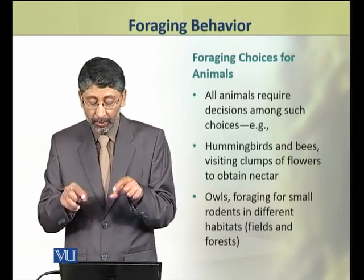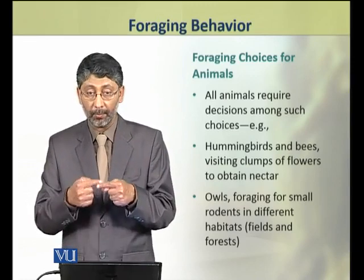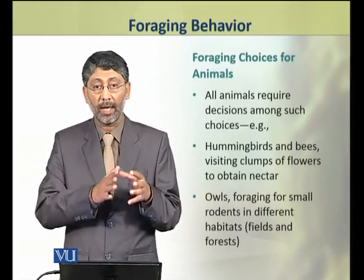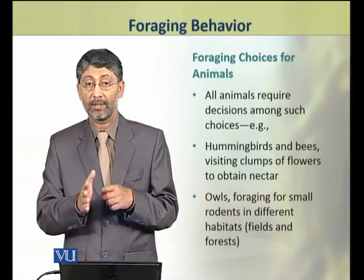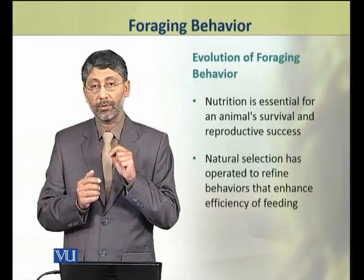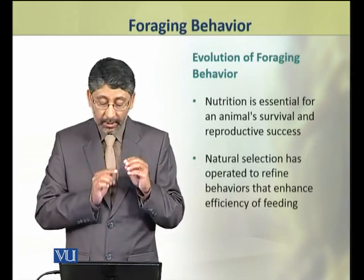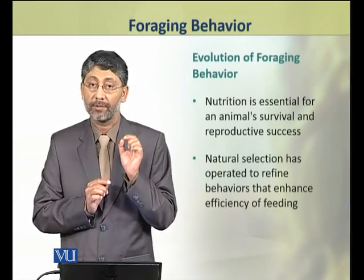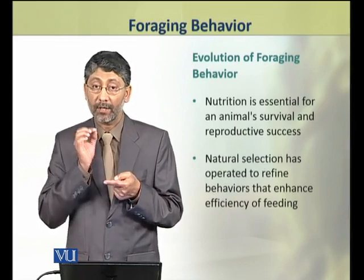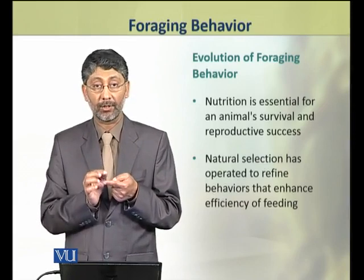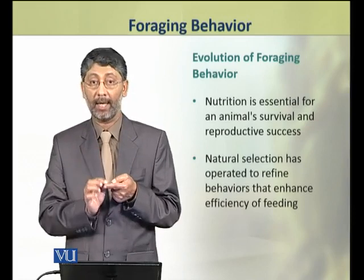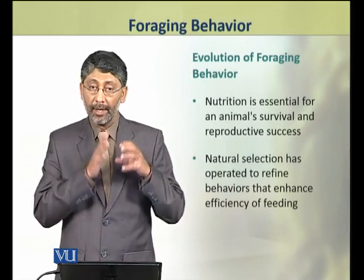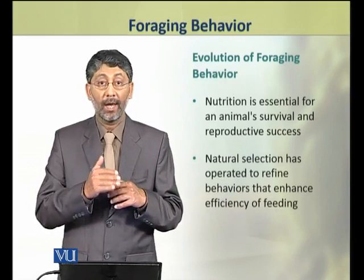Their prey items are distributed in patches, and when food is depleted in those patches, such animals have to make decisions. This is essential for an animal's survival and reproductive success. Such processes that are important for survival are subject to natural selection and evolution, which play an important role. That is why foraging behavior is also under natural selection, on which evolution and natural selection have operated.